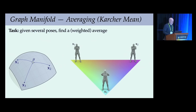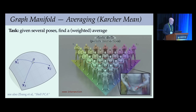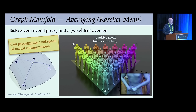Once we have these basic primitives, we can build up higher-order operations like statistics on shapes. Computing a weighted average with a purely elastic model gives lots of intersections, but adding the repulsive term gives a nice intersection-free shape space that could be precomputed or baked for future use.